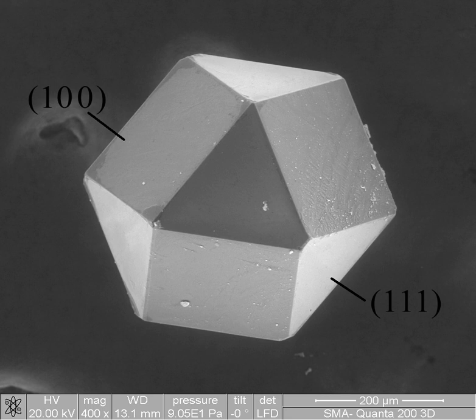Macrostructure is the appearance of a material in the scale millimeters to meters. It is the structure of the material seen with the naked eye.